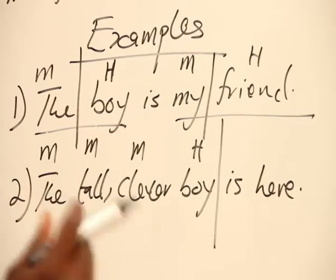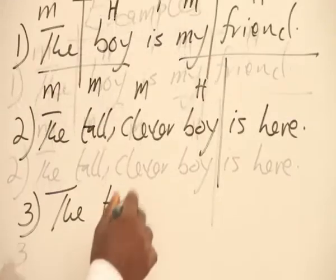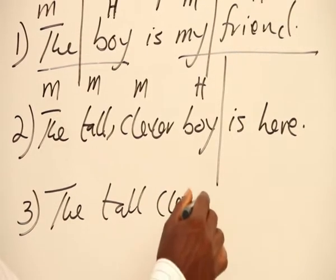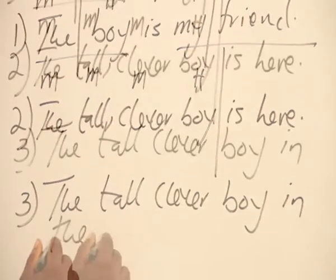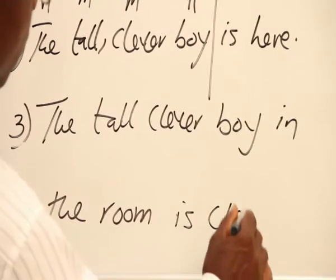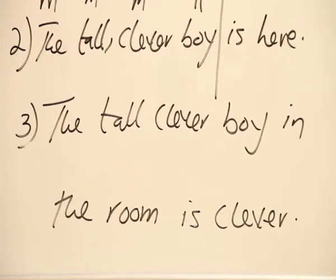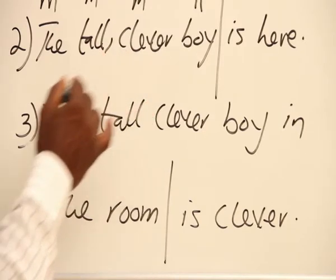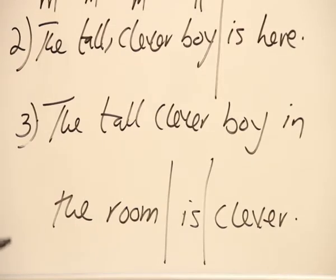So the complexity has increased. But it remains the same now. Now we move on to example three. The tall, clever boy in the room is clever. The whole of this sentence actually has the tall, clever boy in the room as its subject. From this point to this point is subject. Then, of course, this is your verb and this is a complement. Now, so you can see the complexity there.